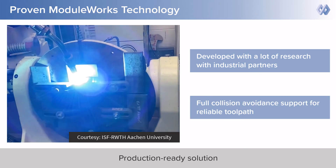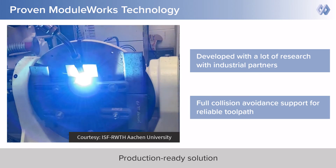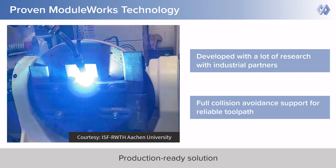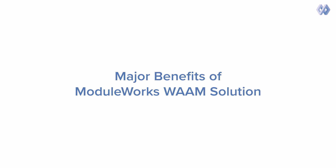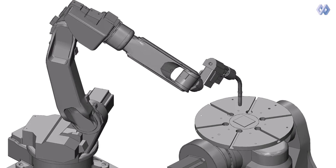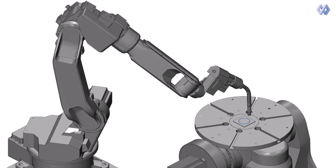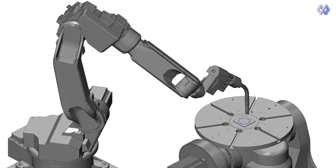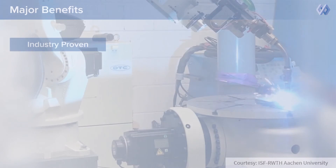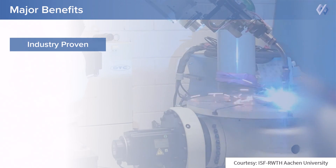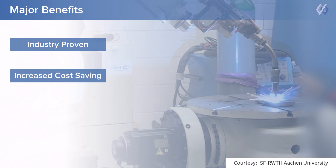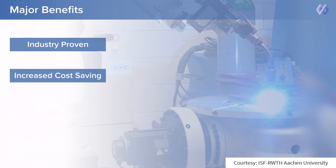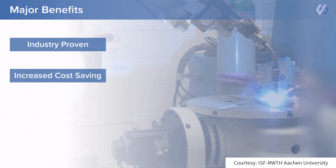It also incorporates a robust toolpath algorithm based on freeform slicing, along with automatic tilting for collision avoidance, making the technology reliable. With all these innovative and advanced features, ModuleWorks provides many benefits to CAM software development and CNC controller manufacturer organizations, such as an industry-proven solution for WAM to support manufacturing the most complex shapes, and increased cost savings for manufacturers by offering functionalities to accurately generate 3D printed parts.